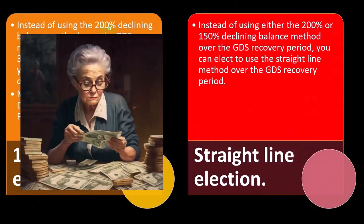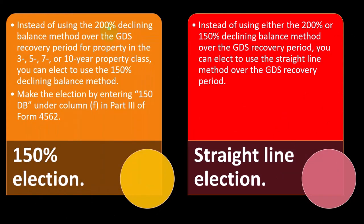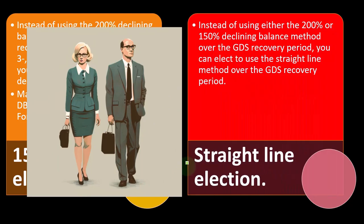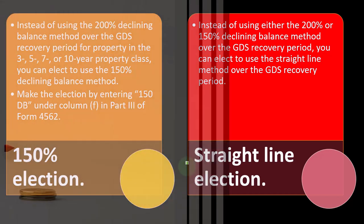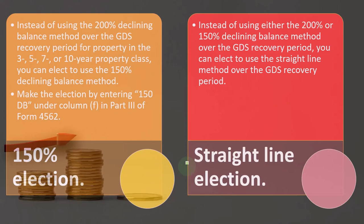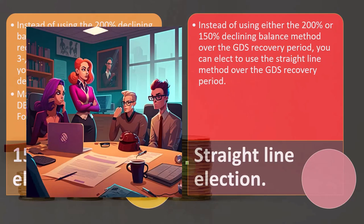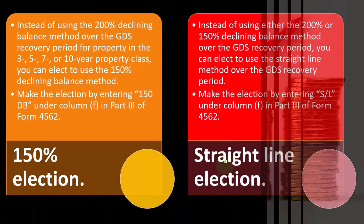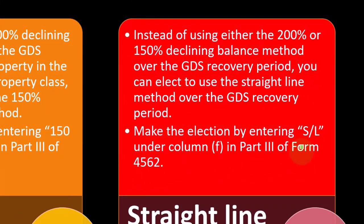The question then becomes: do you want the double declining balance default — usually the most beneficial because you get more expense upfront — or do you want to taper toward straight-line to get more depreciation in later years, possibly because you expect a higher tax bracket due to higher future income? You can elect all the way back to straight-line, but then you must stick to it, or take the middle position at 150%. Make the straight-line election by entering "S/L" under column F in part three of Form 4562.